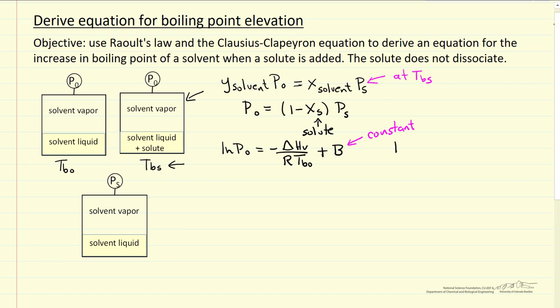Well, likewise, I can write this equation for this system here. The solvent at pressure x is also related to the same Clausius-Clapeyron equation. But this system, to have that pressure, is at this temperature. So this is the elevated boiling point for the mixture, and the same constant B.